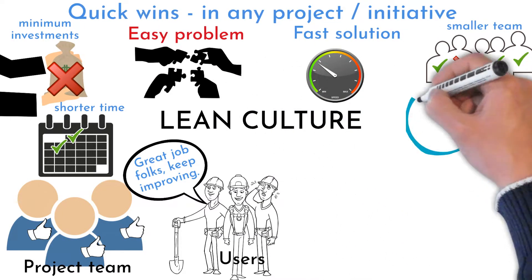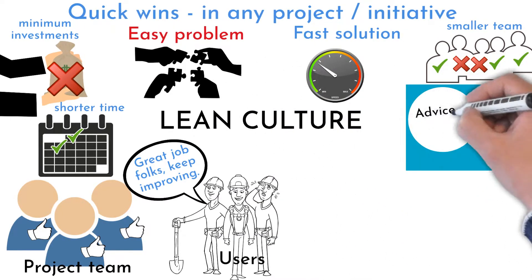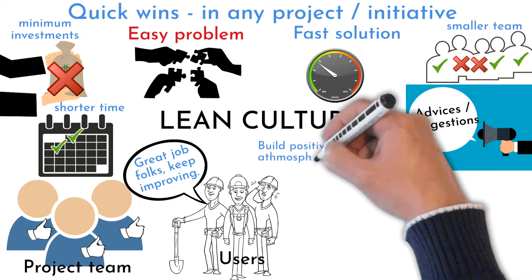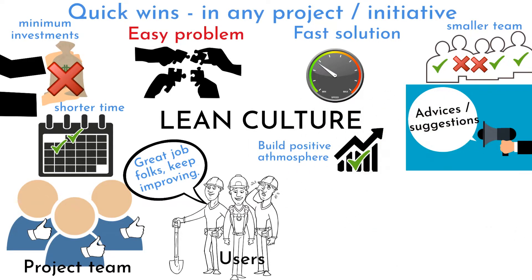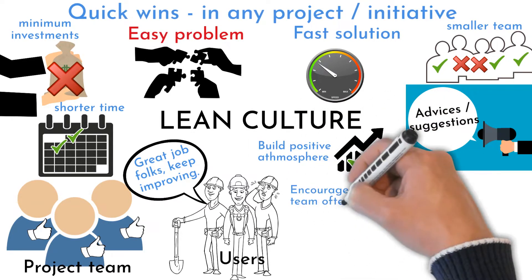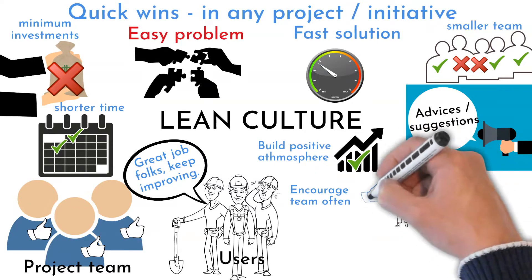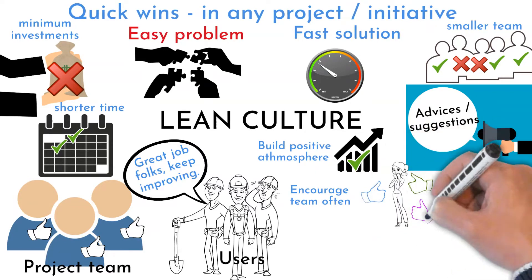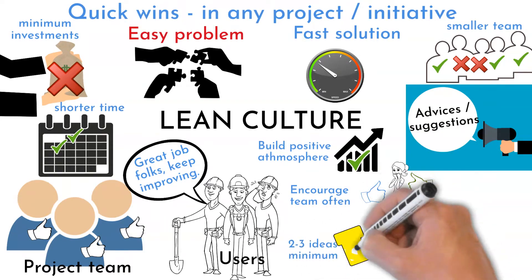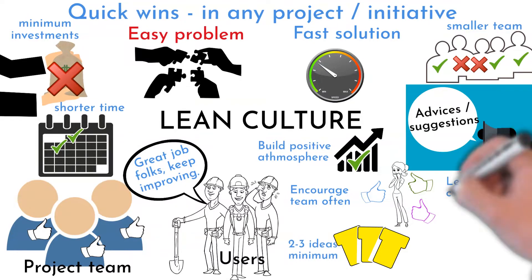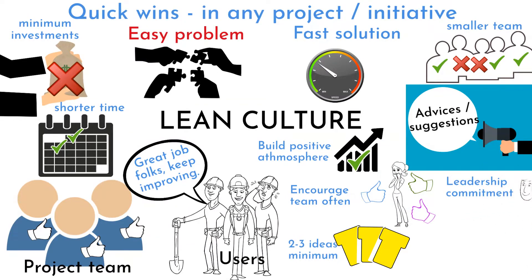Here are some tips for lean culture implementation: build a positive atmosphere for improvements, encourage team members often to work on their processes, and challenge people to deliver at least two to three ideas during the year. Show commitment, generate your own improvement ideas, and lead by example.